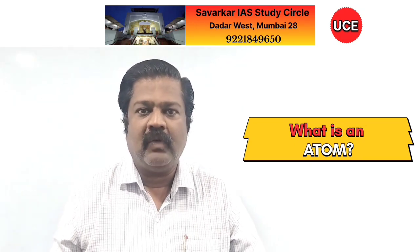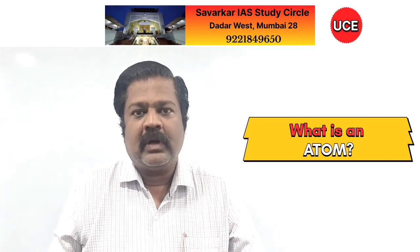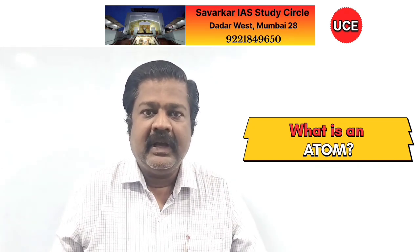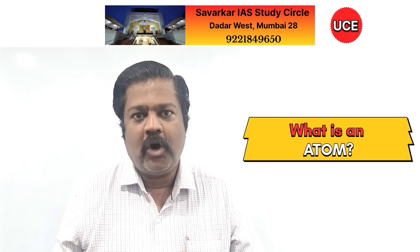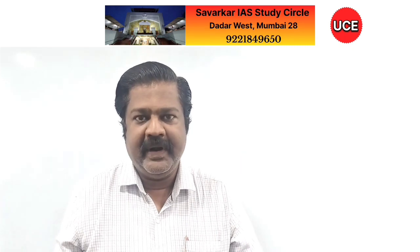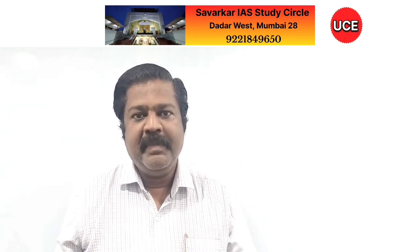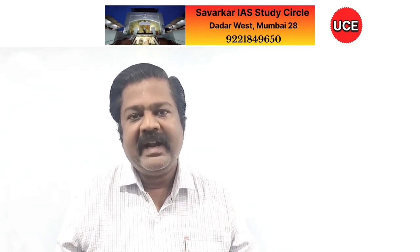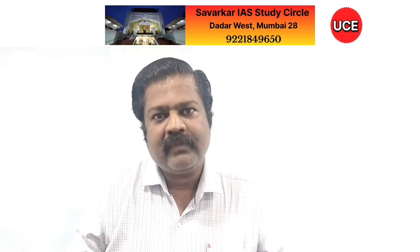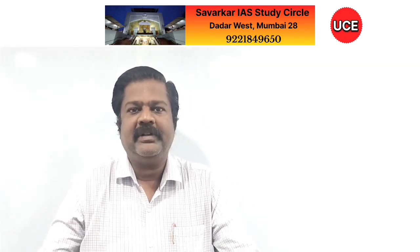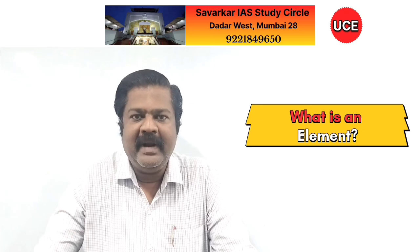The first question is: what is an atom? An atom is defined as the smallest particle of an element possessing all chemical properties of that element. From this definition, it is very clear what an element is, so we have to discuss now what is an element.